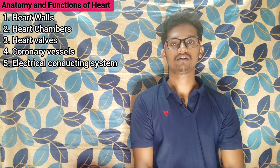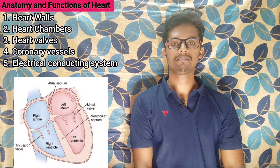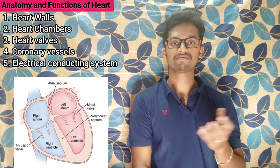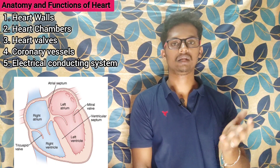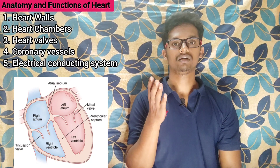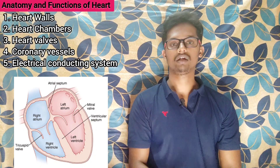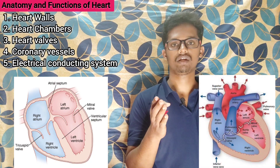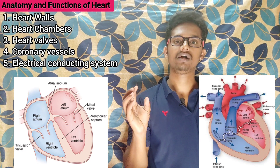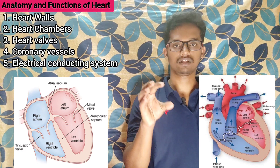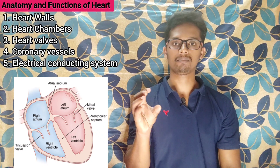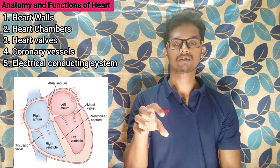Next, chambers of the heart. The heart has four chambers. On the right side: right atrium and right ventricle. On the left side: left atrium and left ventricle. If you look at the right atrium, two veins connect — one is the superior vena cava and one is the inferior vena cava. These two veins bring blood into the right atrium.